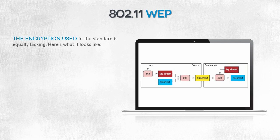The encryption used in the WEP standard is weak. The process can be seen in the picture below. It's necessary to calculate the checksum of the packet first — it's an ordinary CRC checksum, not a cryptographic hash function. This means that WEP-protected packets are vulnerable to tampering. An attacker can modify the content of a frame and forward it by calculating the correct checksum. The checksum is added to the sent packet, and this is not secured in any way.